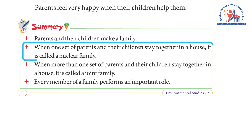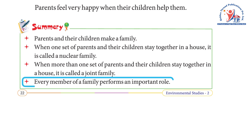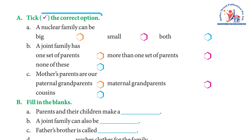Summary: parents and their children make a family. When one set of parents and their children stay together in a house, it is called a nuclear family. When more than one set of parents and their children stay together in a house, it is called a joint family. Every member of a family performs an important role.